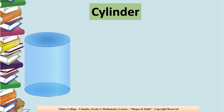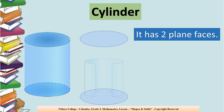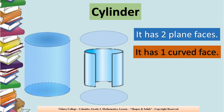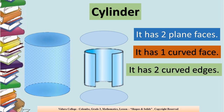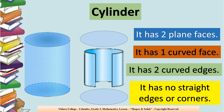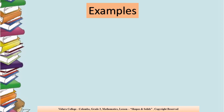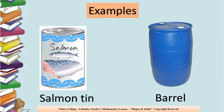Our next solid is cylinder. What can we say about a cylinder? It has two plane faces — an up face and a down face. It has two plane faces and one curved face. How many curved faces? There is only one curved face. And it has two curved edges, and it has no straight edges or corners. What are the examples for cylinder? We can take a tin can and barrel.